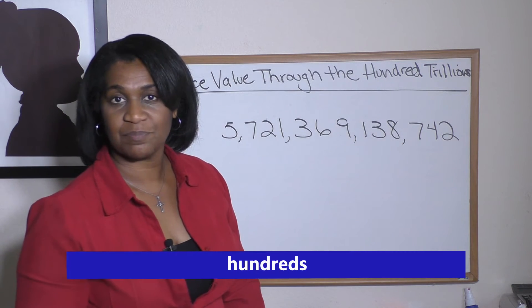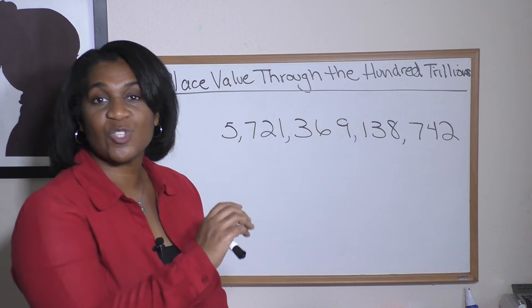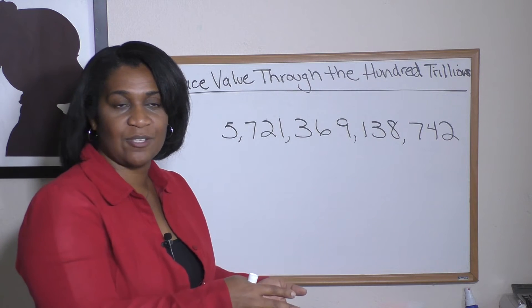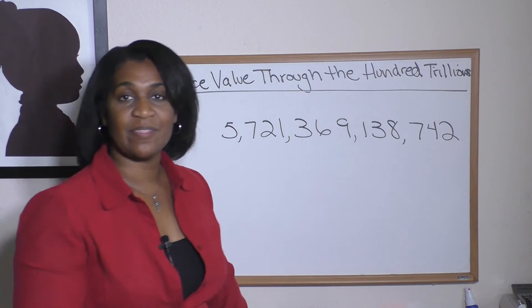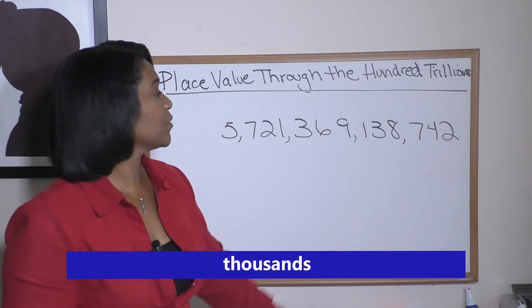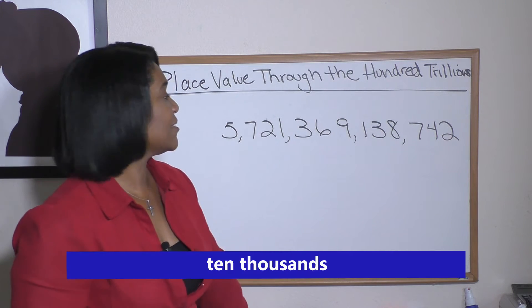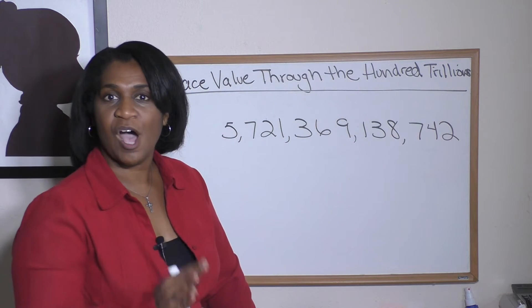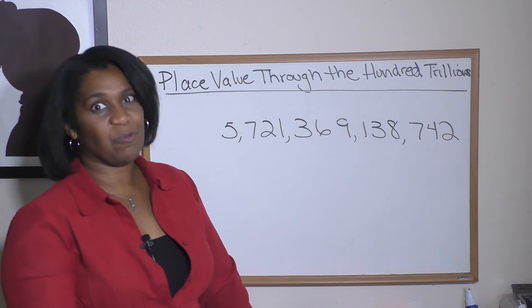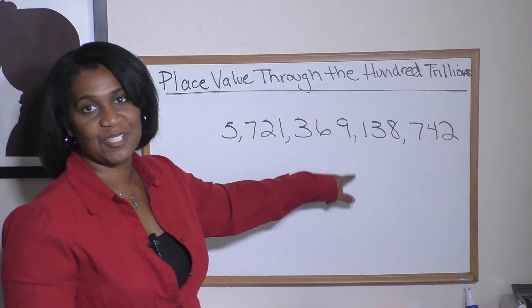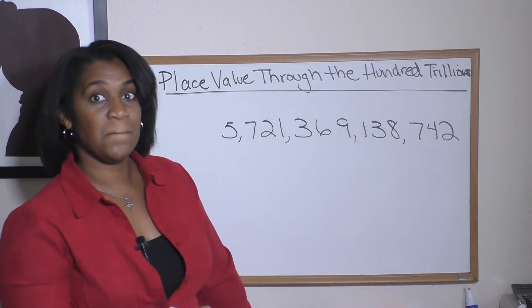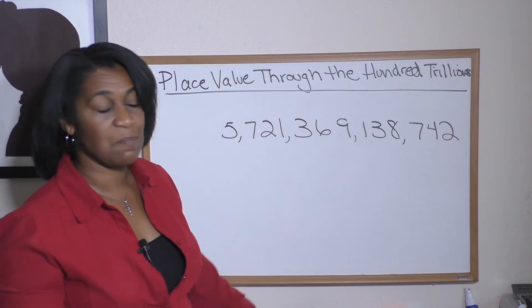But then we have that comma. As soon as we hit that comma, things change. And our eight is in the thousands, our three is in the ten thousands, our one is in the hundred thousands. Wait, we hit a comma, so things change. Now we move to the millions. Our nine is in the millions, six is in the ten millions, three is in the hundred millions.